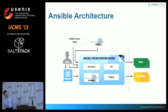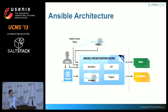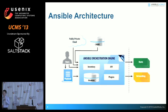Here's an overview of the architecture. Ansible runs on a management machine — there are a couple of exceptions to that which I'll talk about in a minute. It has an inventory of your systems. The most basic form of inventory is just a flat file of hostnames in groups and subgroups with associated variables.